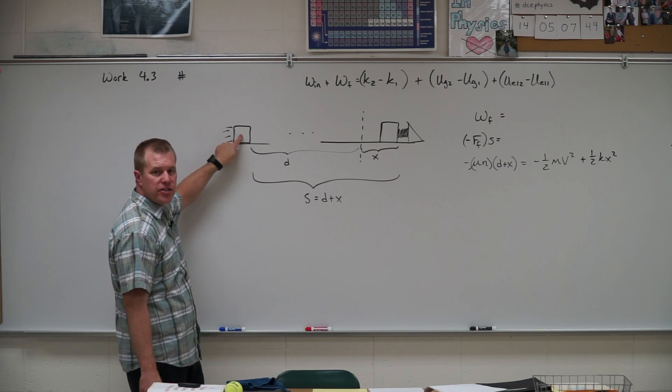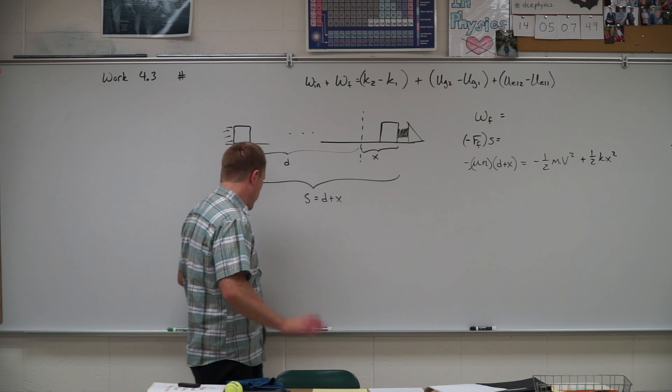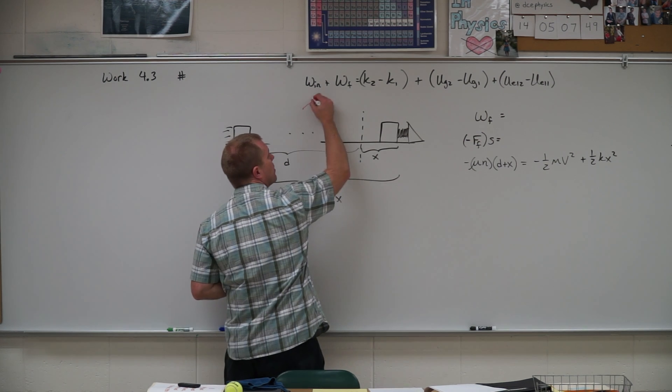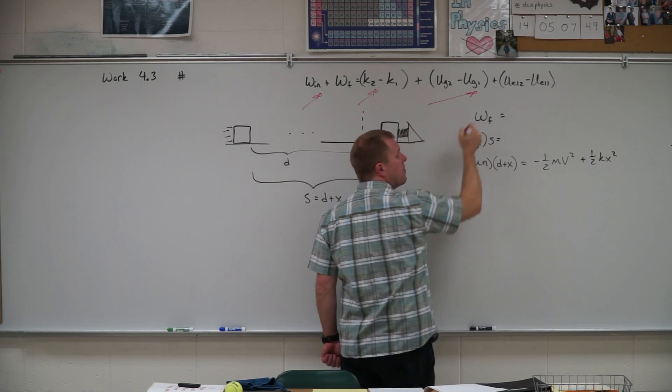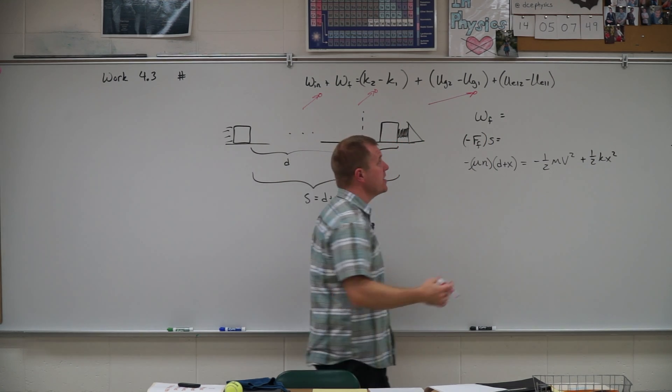So when we set our problem up, we have our starting point, we have our ending point, we start crossing stuff out. There is no one applying a force, there's no kinetic energy at the end, it starts and ends at the same height so the two potential energies cancel out, and the spring is originally not compressed.